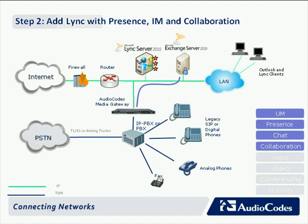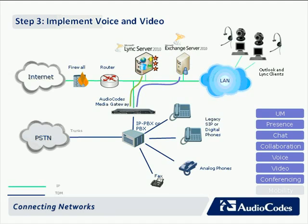Next we move on to step three: starting to activate some of the voice and video features. You want to pick what we call the frequent communicator club — the remote employees, often your salespeople, others that spend a lot of time communicating. The first step is to supersize your LAN, giving consideration to the additional voice traffic. A lot of folks have already done that — it's usually not a very complex step, but it's important as we move forward with the rest of this deployment.